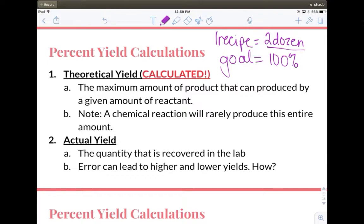So every calculated stoichiometry conversion that we do is what we call the theoretical yield. That is if we do everything properly in a reaction, this is how much we should create in a maximum. The actual yield is what we actually recover in the lab. Error can lead to higher and lower yields.